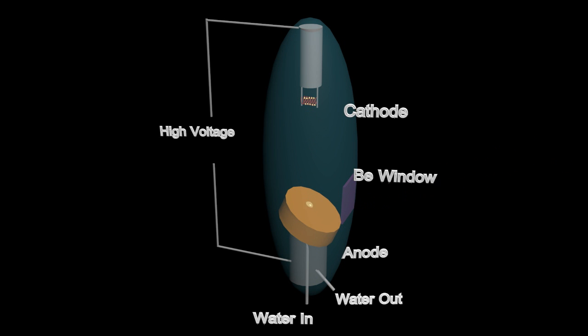Since the anode is heating up very quickly, it needs to be cooled down, and this is done with water cooling. As the electrons interact with the anode, the x-rays are emitted.